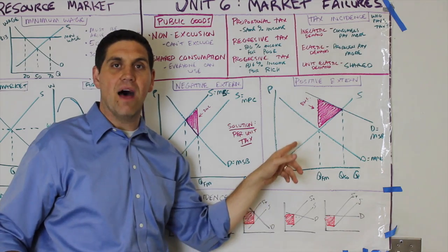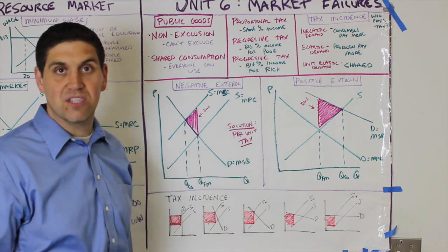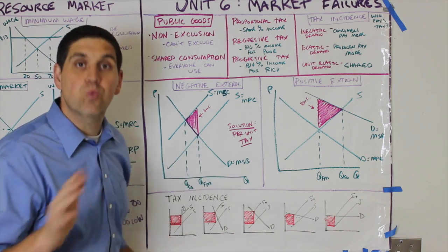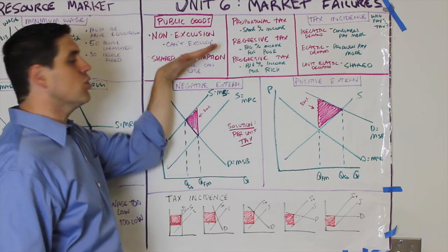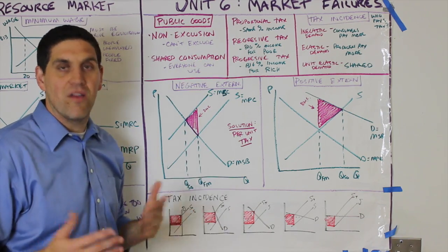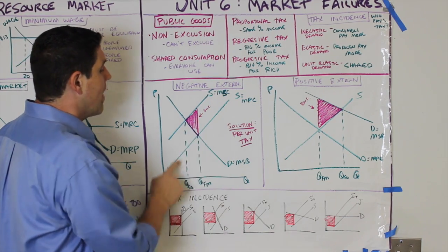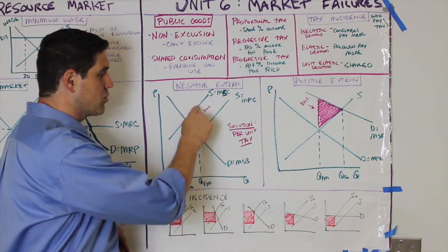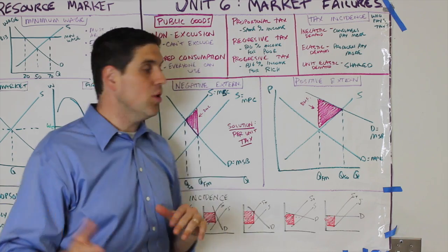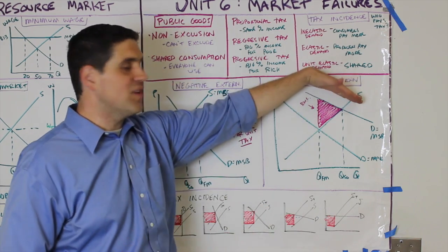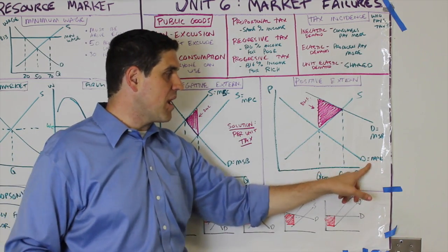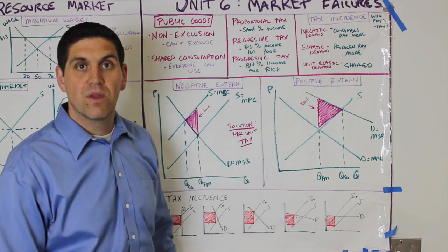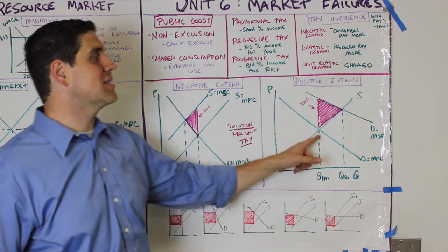The next concept is negative and positive externalities — external costs or benefits to other people. A negative externality means the free market produces too much: there's a marginal private cost and an additional marginal social cost due to spillover costs. We should be producing the socially optimal quantity, but we're not — the deadweight loss is the gap. With a positive externality, there are additional benefits to others, so the free market produces too little — there's a marginal private benefit and a higher marginal social benefit, and deadweight loss results from under-production.